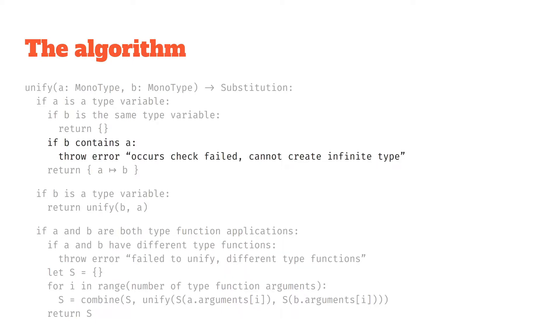So the next thing we do is we check if b contains a. So b might be a type function application, and we want to check that a isn't contained in it, otherwise we get this problem where we're generating infinite types, which is going to make our type system sad. And so we'd throw an error saying that an occurs check failed, and this would probably be bubbled up to the programmer saying, hey, there's probably some logical error in your code here.